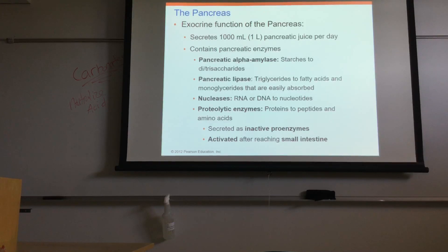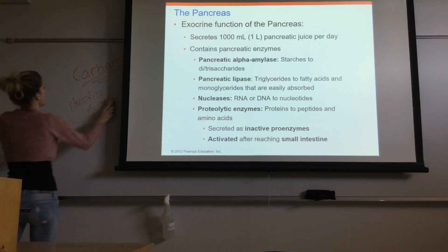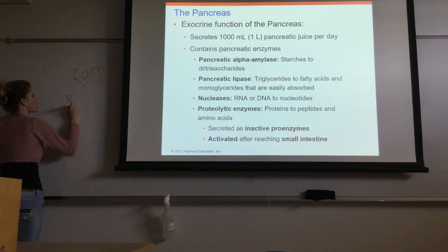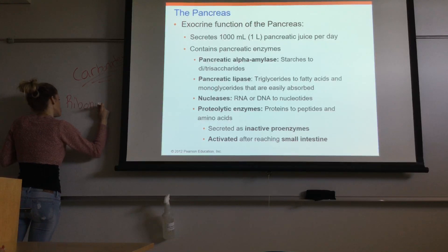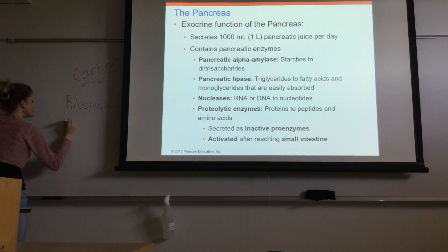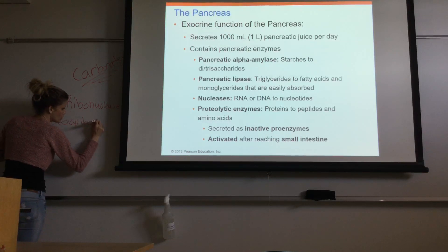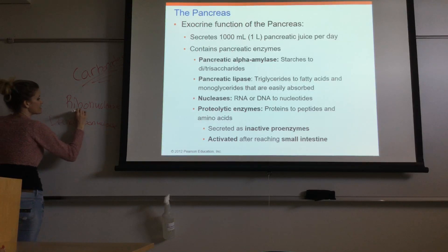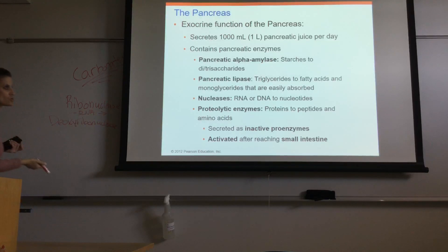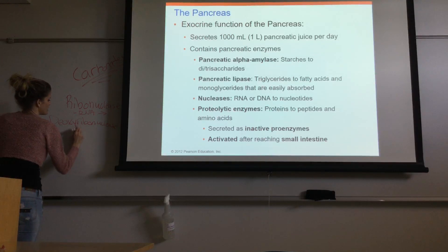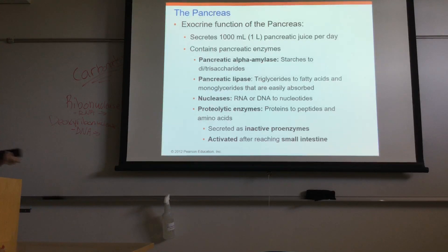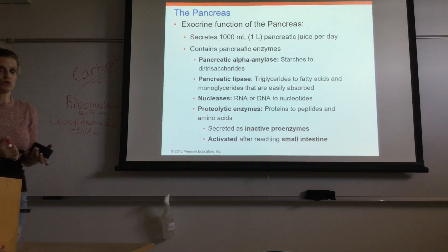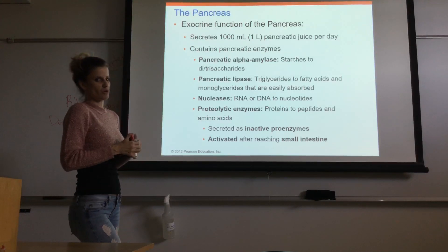Nucleases break down RNA and DNA into individual nucleotides. Ribonuclease breaks down RNA into individual nucleotides, and deoxyribonuclease breaks down DNA into individual nucleotides. Those nucleotides can be further broken down into their sugars and bases once we utilize the brush border enzymes.